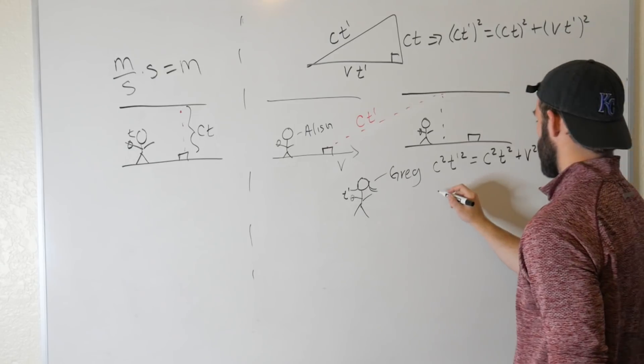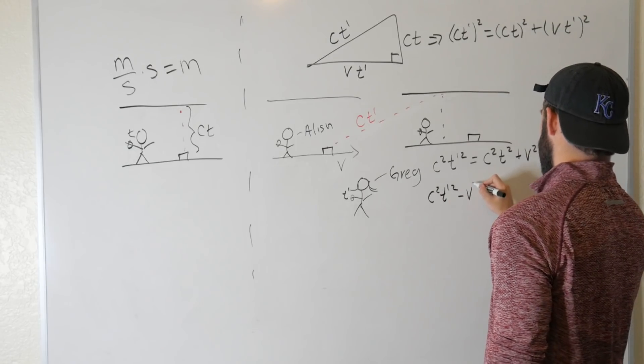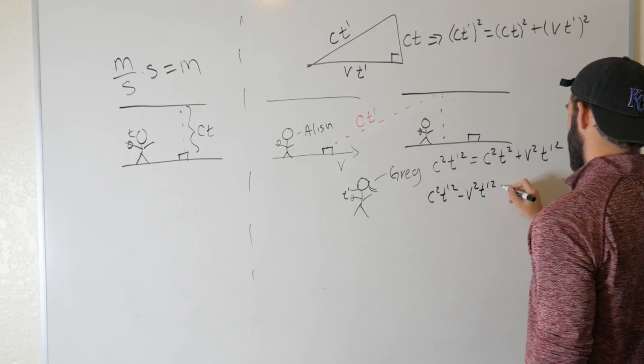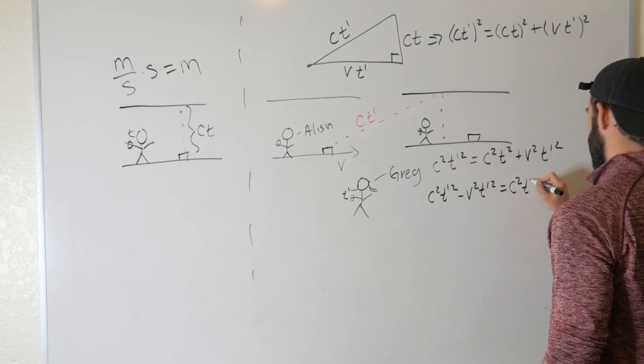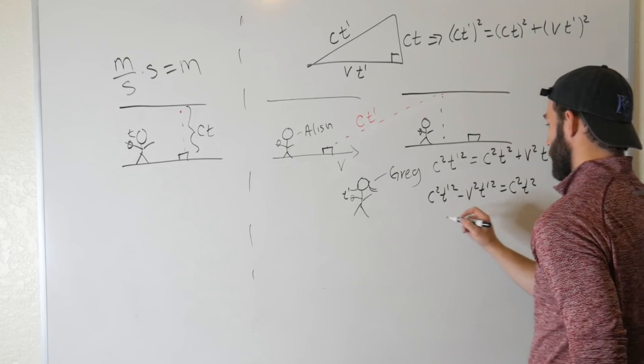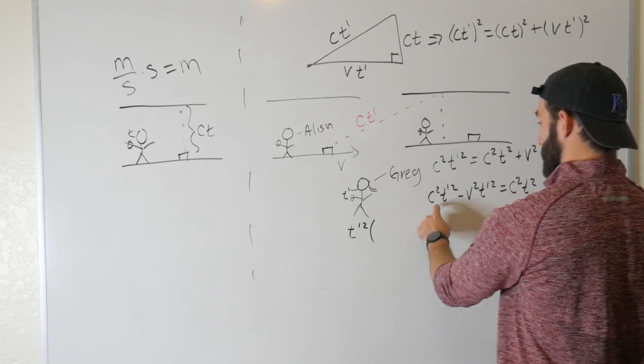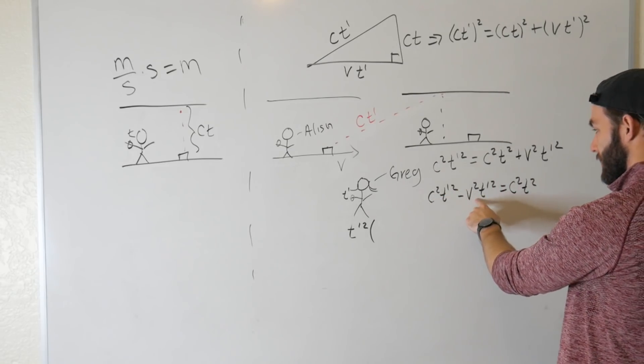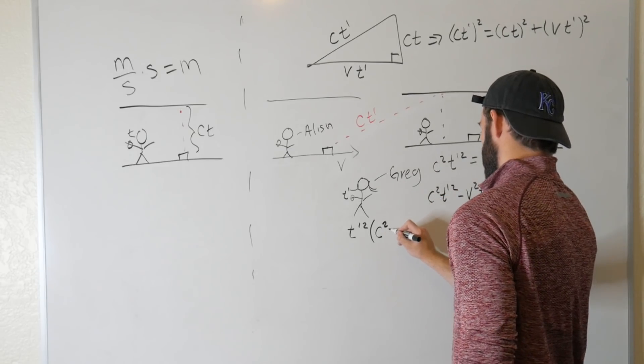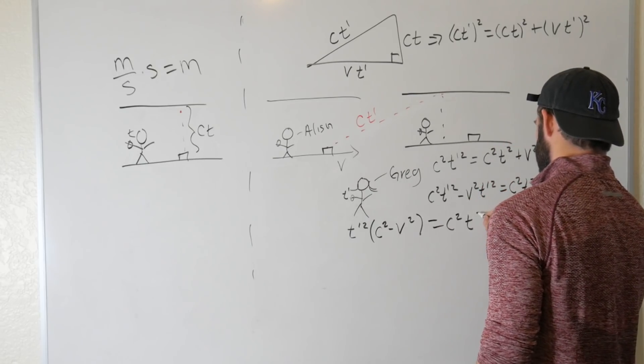And let's get the T prime over. So this is going to be C squared T prime squared minus V squared T prime squared is equal to C squared T squared. And now we can factor out this T prime. So we get T prime squared times C squared minus V squared is equal to C squared T squared.